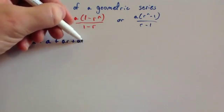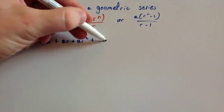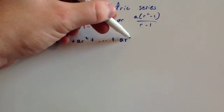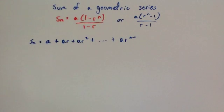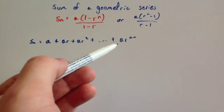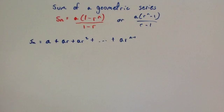The second term will be AR squared and so on, all the way up to the last term, which is AR to the power of n minus 1. So that's the geometric series: A plus AR plus AR squared plus all the way up to the last term, which will be AR to the n minus 1.